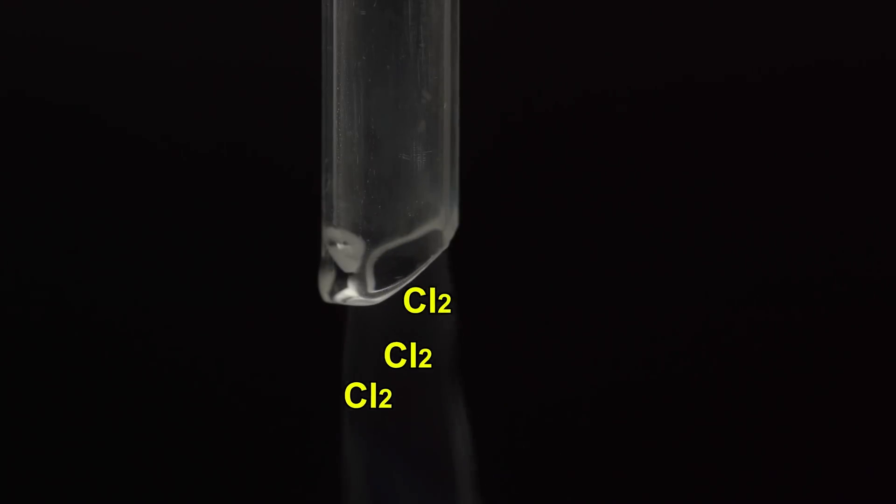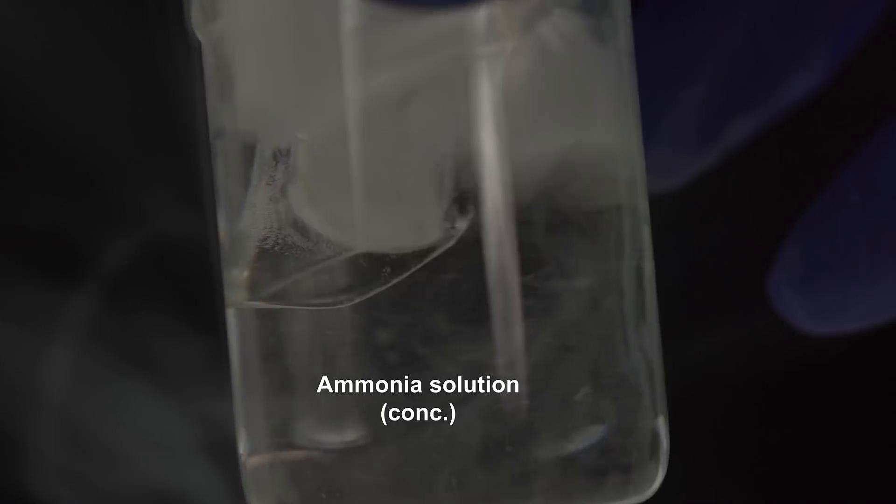Hey guys, in one of my previous videos I showed you a case of yellow-orange chemiluminescence that takes place when chlorine is passed through concentrated aqueous ammonia solution.